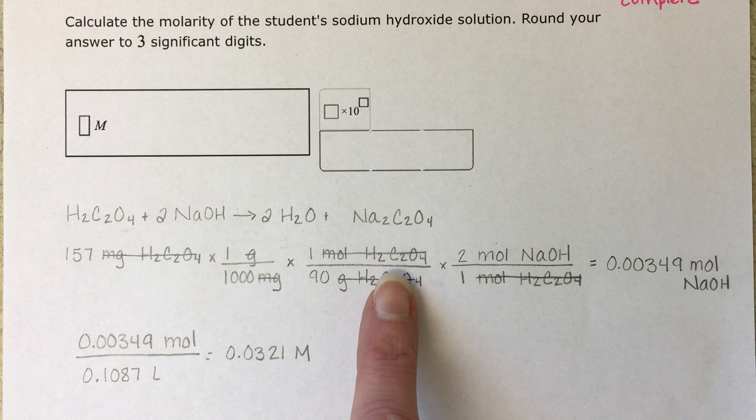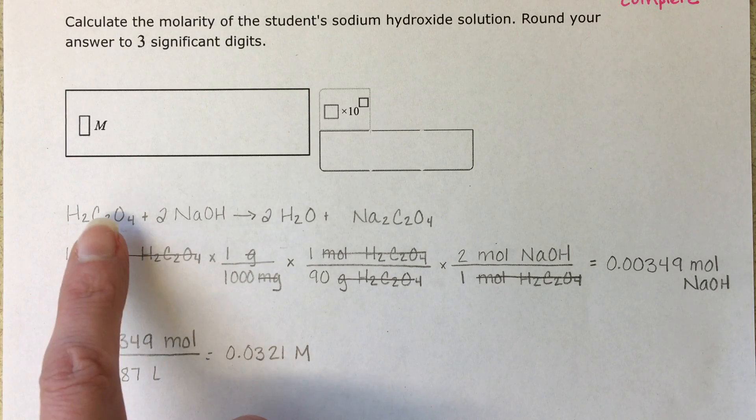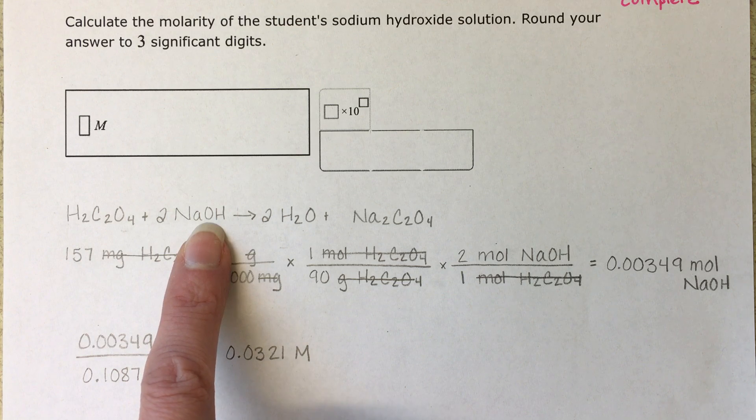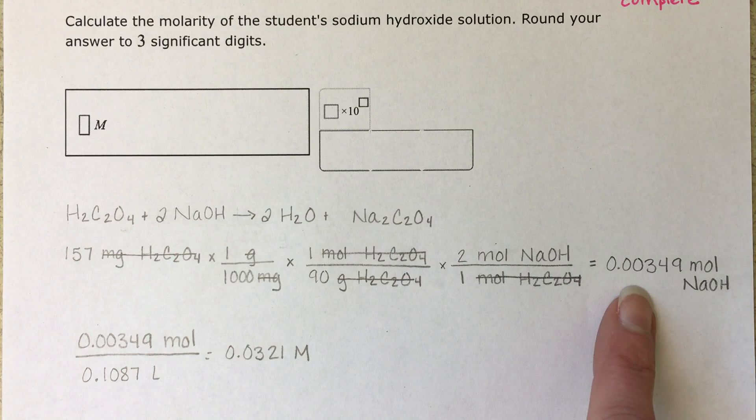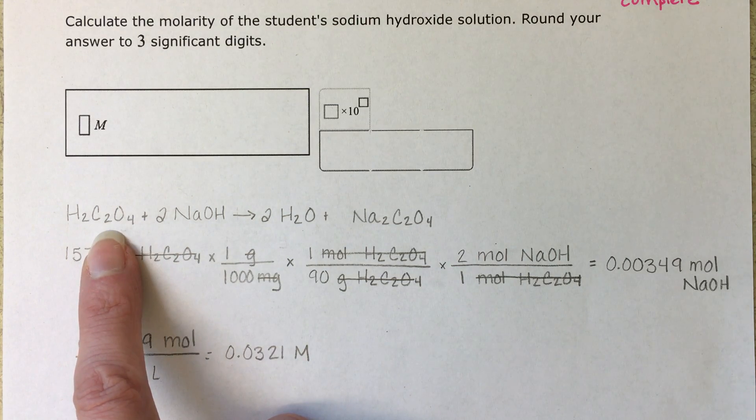And then I'm going to relate moles of oxalic acid into moles of sodium hydroxide using the coefficients from the balanced equation. That tells me that I need 0.00394 moles of sodium hydroxide to neutralize or react with that given amount of oxalic acid.